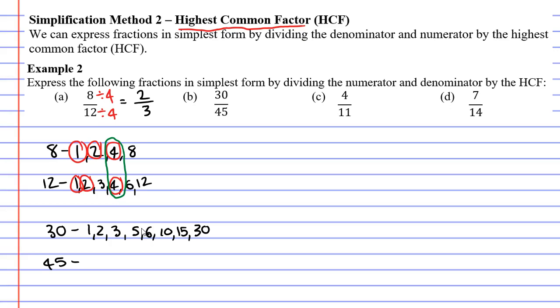So I have 8 factors here, quite a lot of factors. Then looking at 45, I know that 1 times 45 makes 45. I also know that 3 times 15 makes 45. And also 5 times 9 makes 45. So this one has 6 factors.